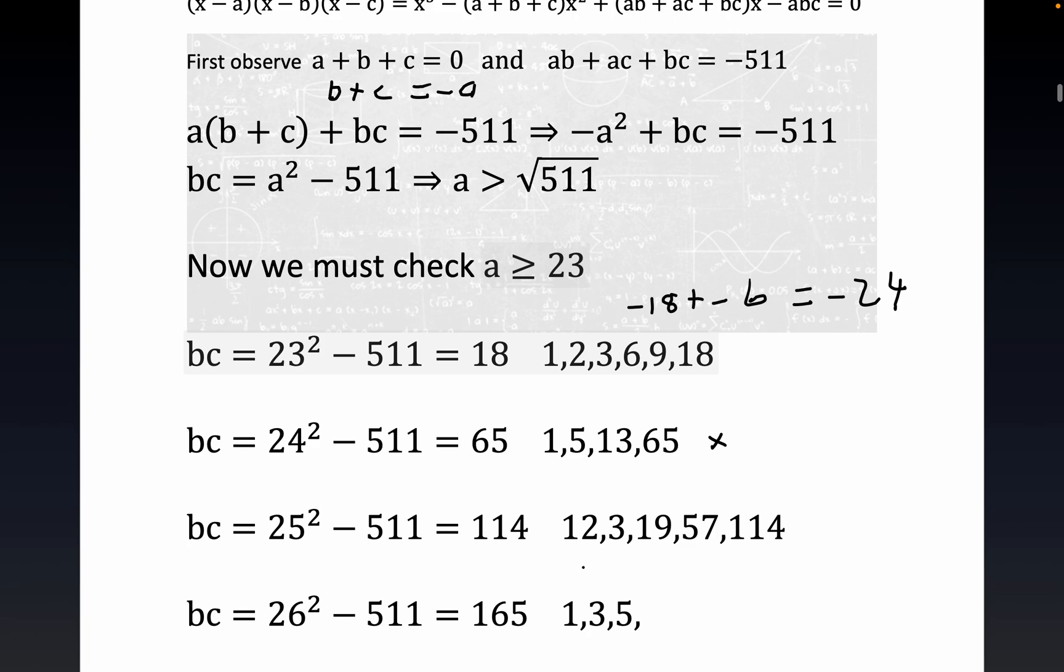We did the next one, 25 squared. So 25 squared minus 511 is 114, these are all the factors of 114. Again nothing. 19 and 13 is kind of close, would be 22, and you can make both of them negative but that doesn't offset 25, so we'll x this one out.